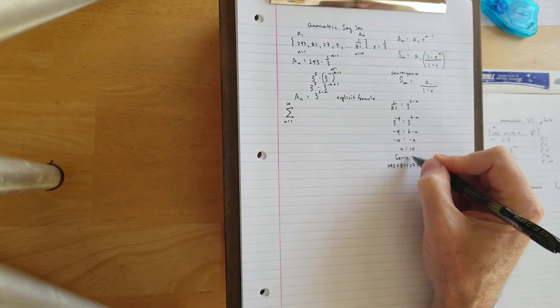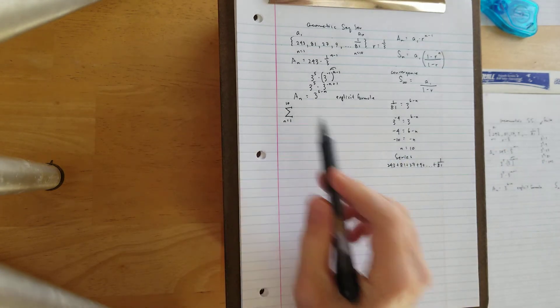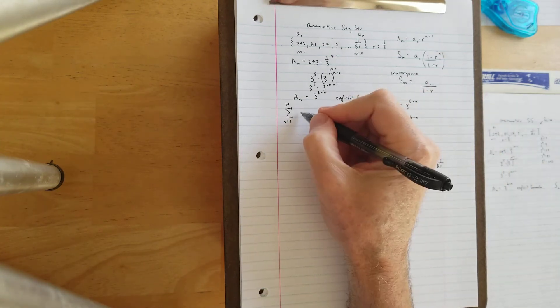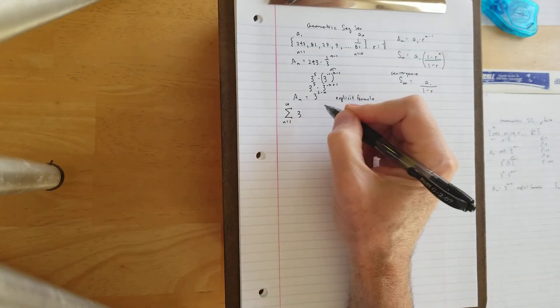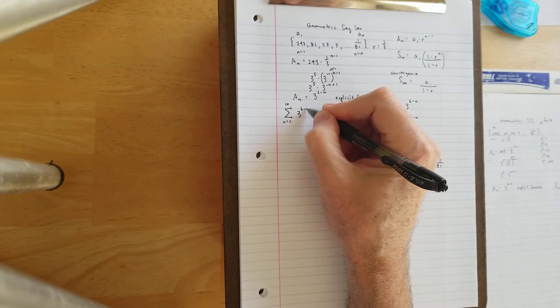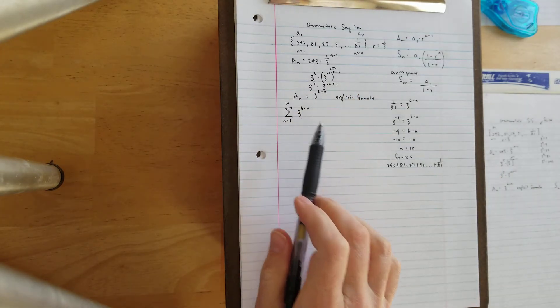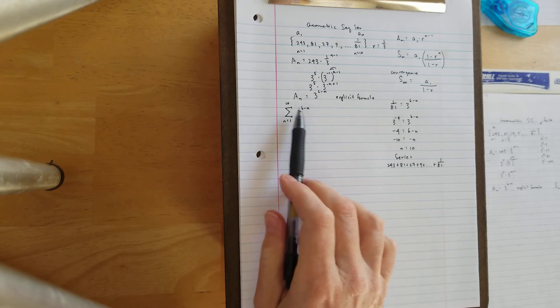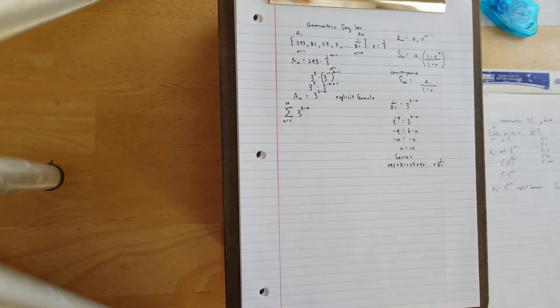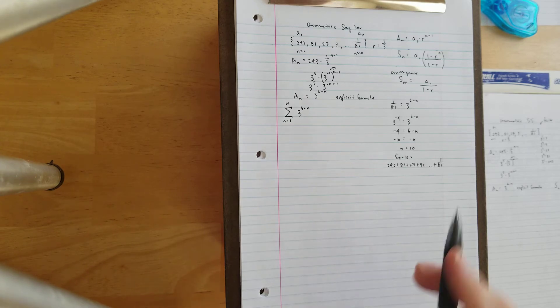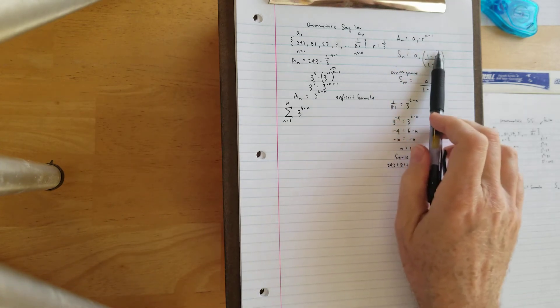When we talk about summation, we can use this as our formula that goes beside the sigma notation, 3 to the 6 minus n. And because this is a little more complex in terms of calculation, we're going to use our calculator to do this one instead this time.